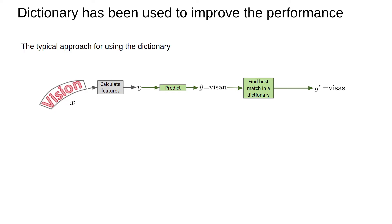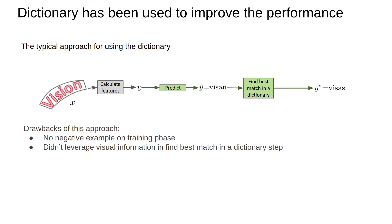In training phase, the model is trained to maximize the probability that text in the box is the given label and only based on appearance loss. There were two problems with this approach. Firstly, there were no negative examples for training phase. Secondly, we didn't leverage any visual information in the step that we use a dictionary to correct the output.